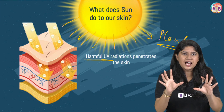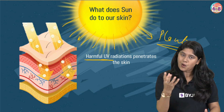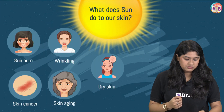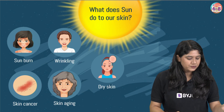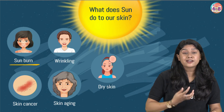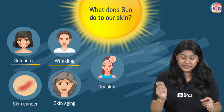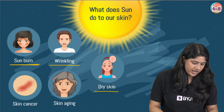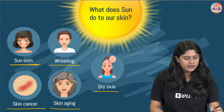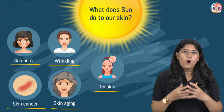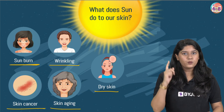These harmful UV radiations can actually penetrate deep down into our skin and cause damage. We know that the sunlight we get is good for us, but not in great quantity. If UV radiation goes into our skin, it can cause sunburn, wrinkles — especially with prolonged exposure to sun rays directly — dry skin, skin cancer, and skin aging. These are some of the effects if we go out in the sun without using sunscreen.